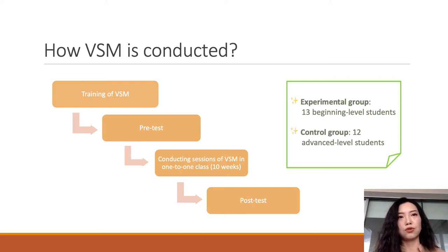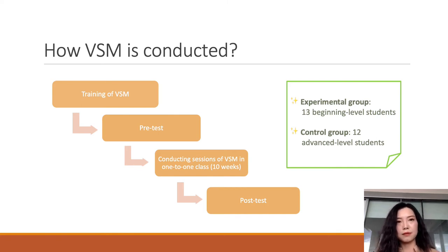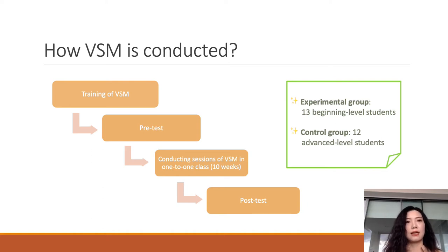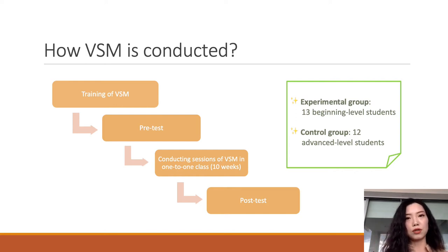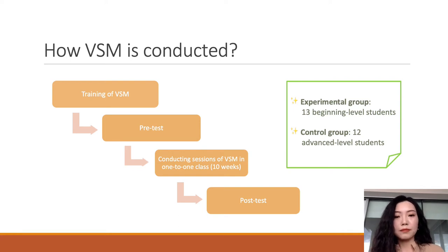One-hour introductory and training sessions were conducted before the intervention. The pre-test phase included an individual oral pre-test, pre-self-efficacy measure, and pre-self-determination measure. Thirteen beginning-level students were trained with video self-modeling instruction.